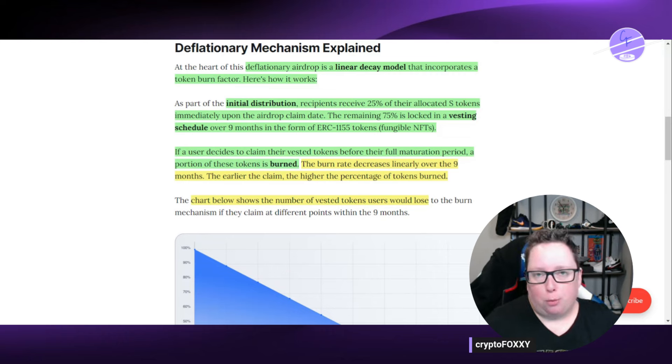There's going to be an initial distribution. Recipients will receive 25% of their allocated S tokens immediately upon the airdrop claim date. So the remaining 75% is going to be locked in a vesting schedule over a nine-month period in the form of an ERC-1155 token, which is a fungible NFT.